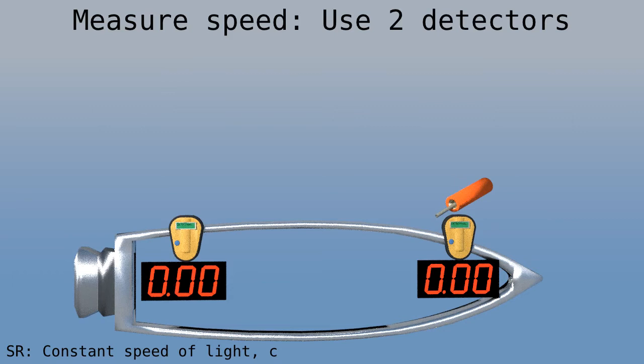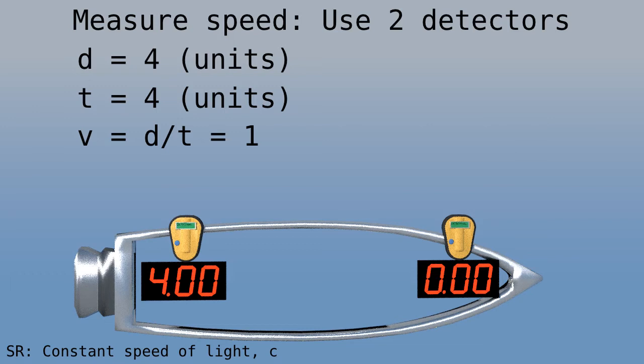To measure the speed of light, we use a firecracker. And we get the velocity 4 divided by 4, which is 1.